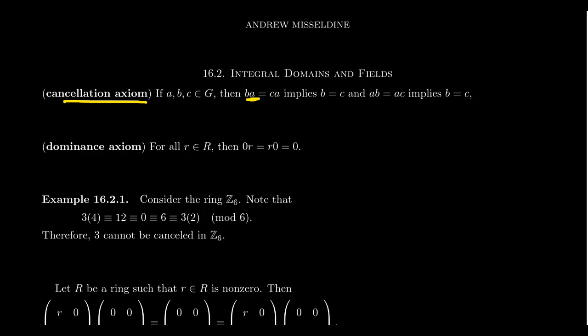Semi-groups, which are a generalization of the idea of groups, don't have cancellation in general. But quasi-groups, a different generalization of groups, have cancellation as their defining property — the cancellation axiom is what makes a quasi-group a quasi-group. Of course, we're focusing on rings in this conversation. In rings, cancellation is not guaranteed. And so in this lecture, as we talk about the idea of an integral domain, we'll see that integral domains are really those rings for which the cancellation axiom is satisfied.